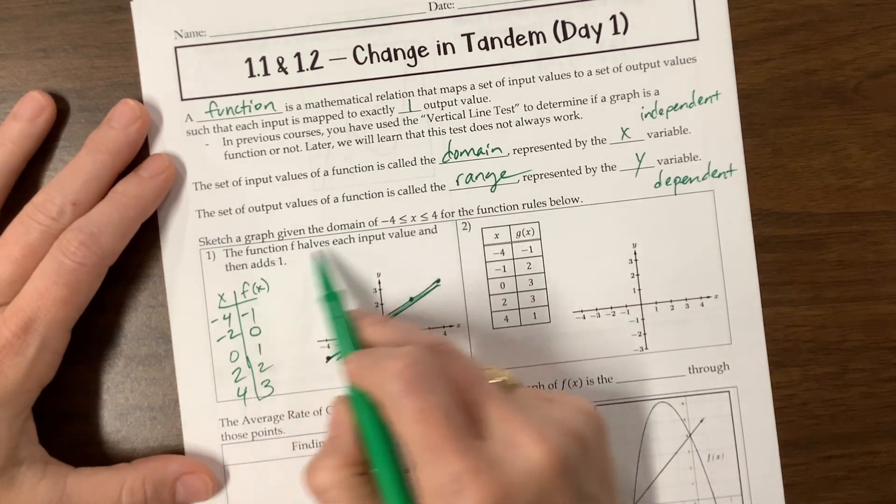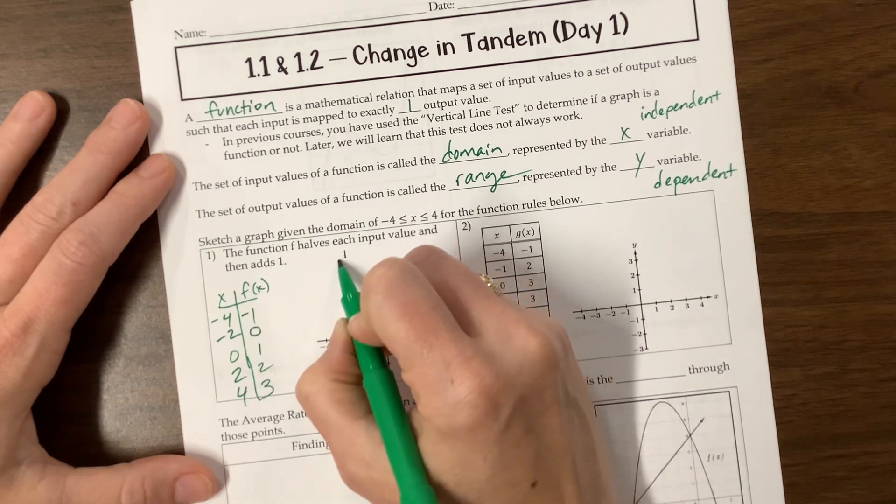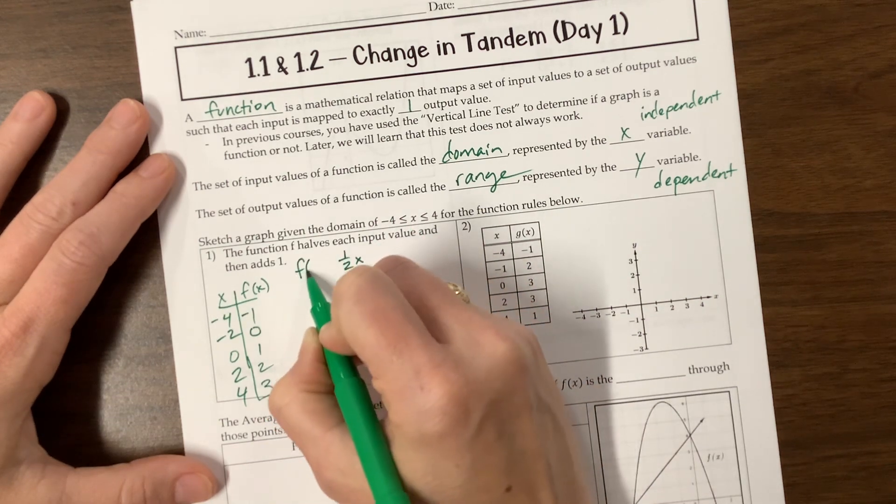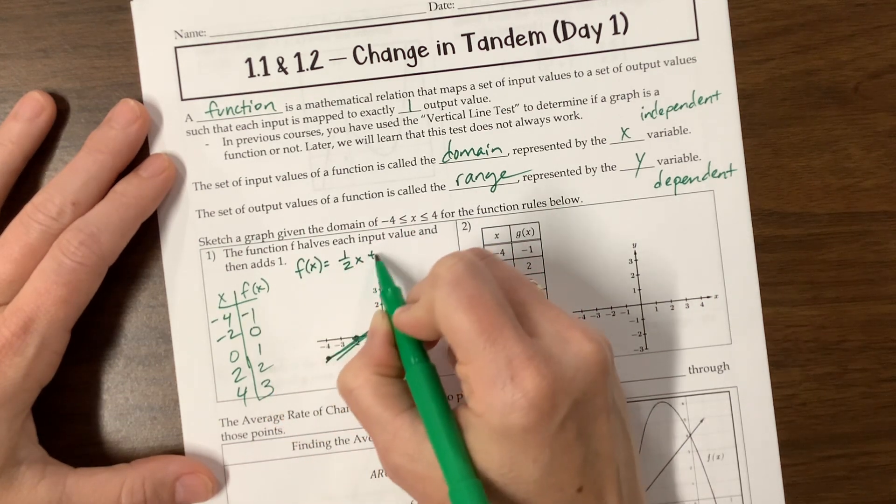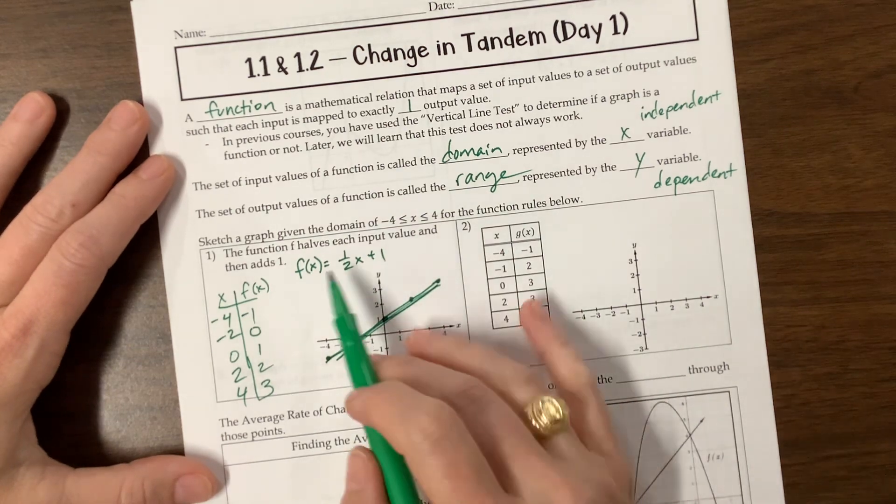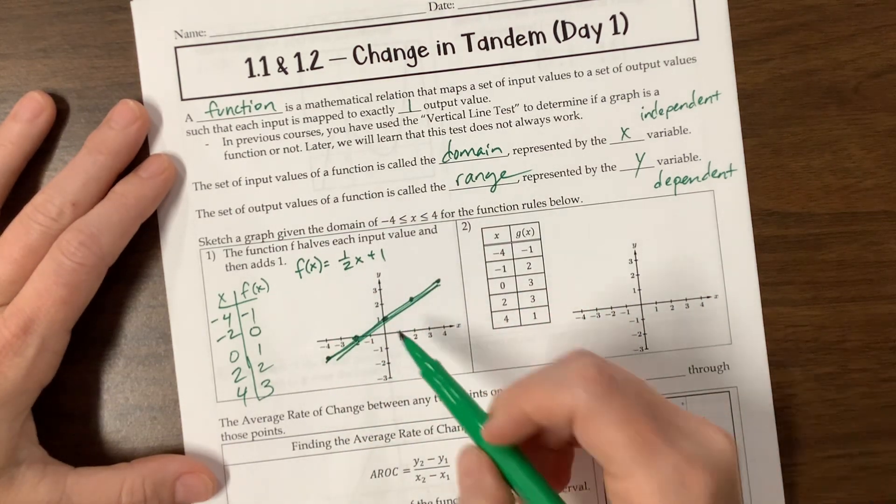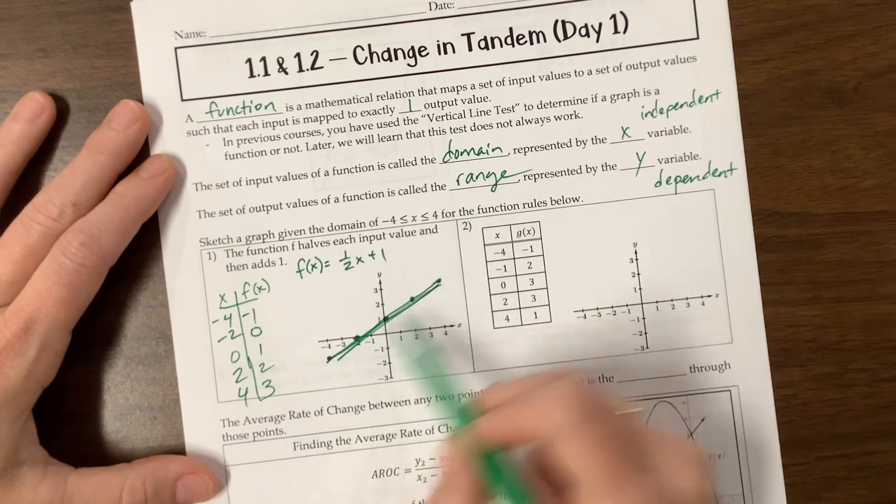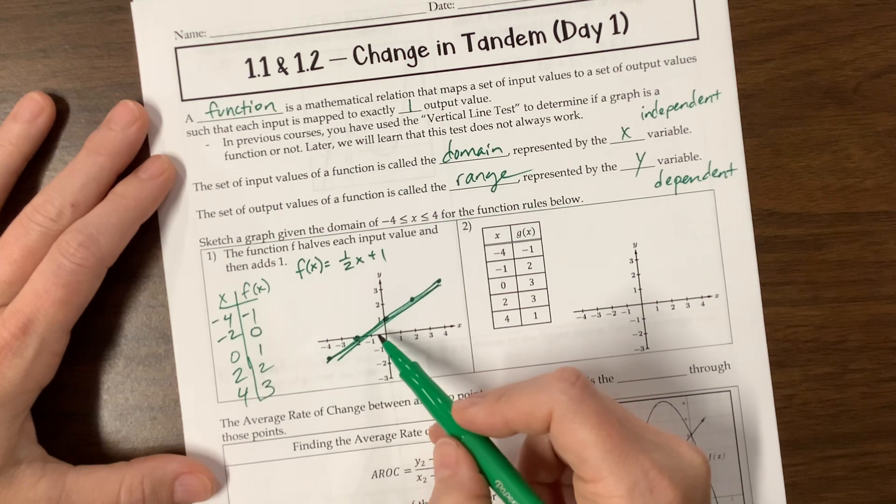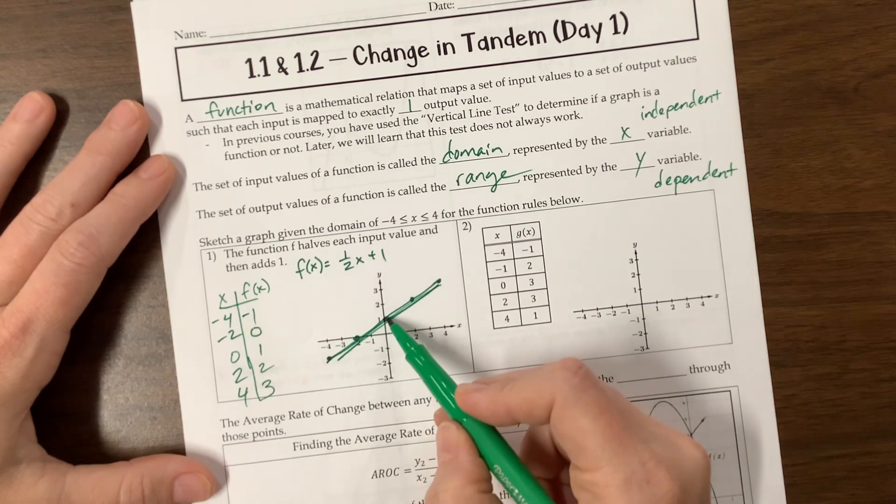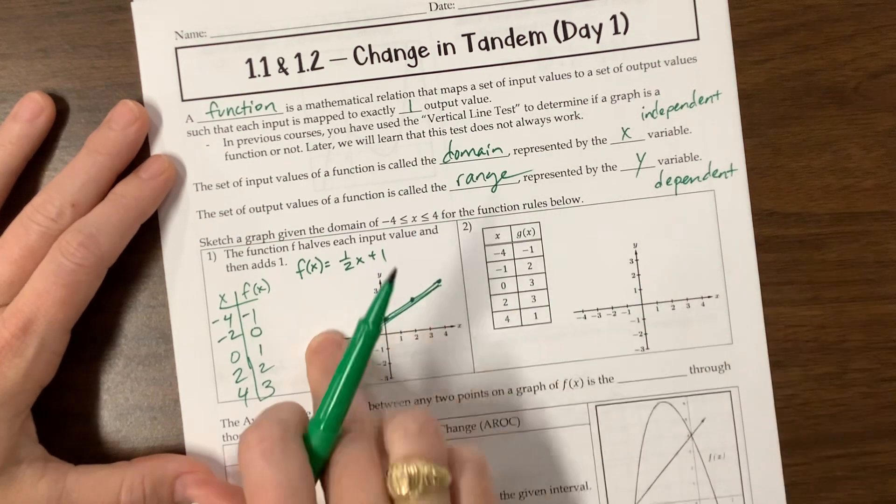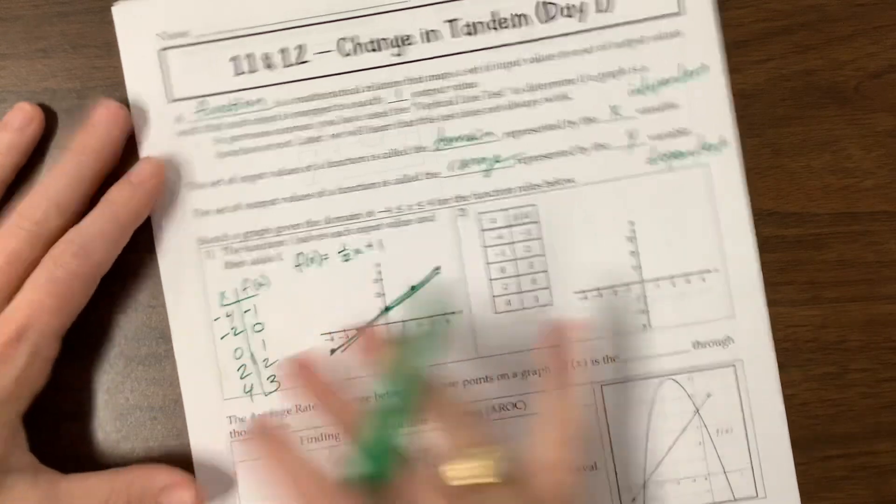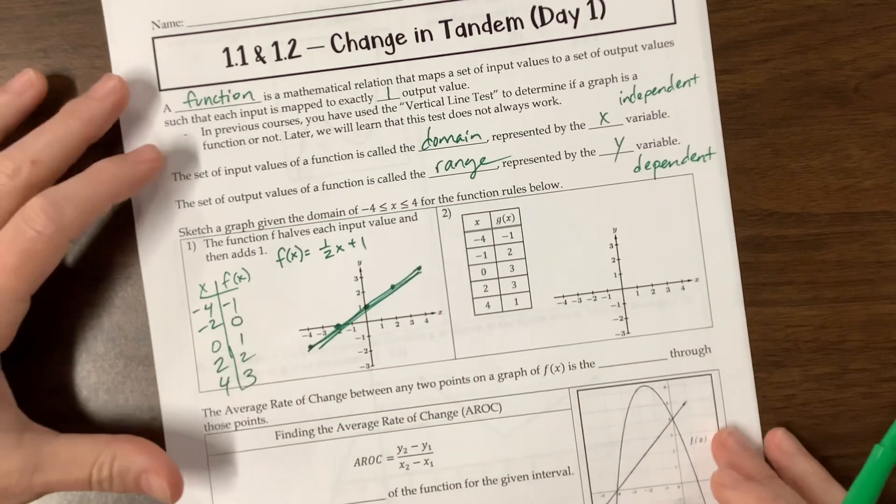We could have thought, oh, the function halves each input value, so half of x. So my function is going to take half of x and then add 1. So if you had gotten there just directly from that, fantastic. Notice our slope, our rise over run. We went up 1 over 2. We started, we had a y value, I mean a y intercept, our b value of positive 1. This is an Algebra 1 review, but it's kind of worded in a different way, so hopefully that made sense.